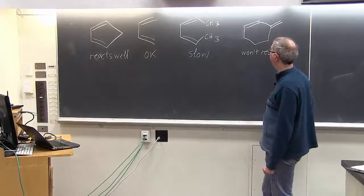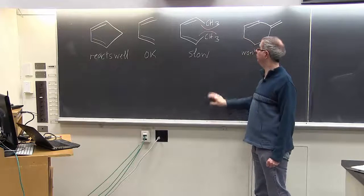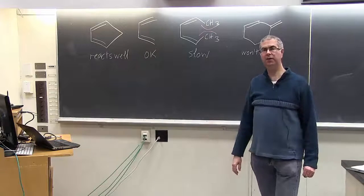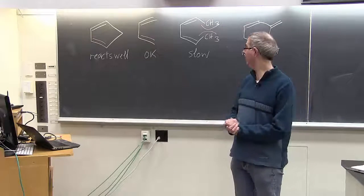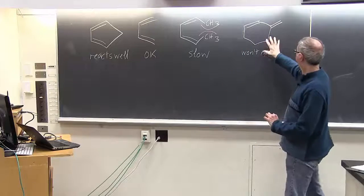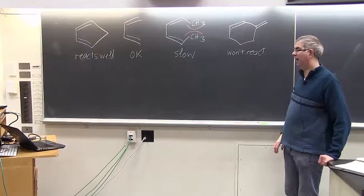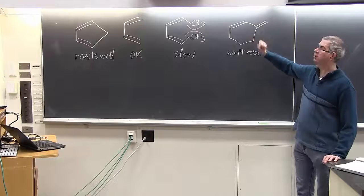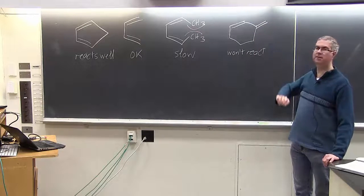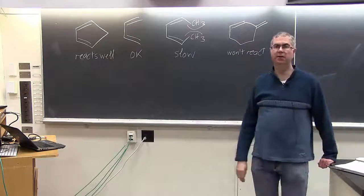This one, where we have an interaction between the methyl groups, this is going to be much slower and may not even happen unless you have a very reactive dienophile. And then last of all, this cyclic one where the double bonds are locked in an S-trans configuration. They can't change unless the whole molecule breaks apart or isomerizes. This one will not react in the Diels-Alder reaction at all.